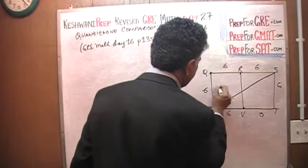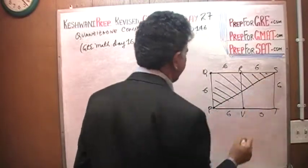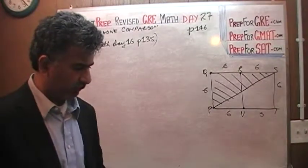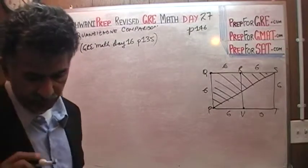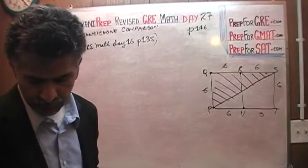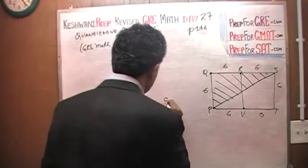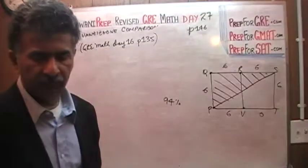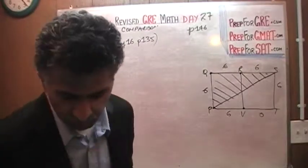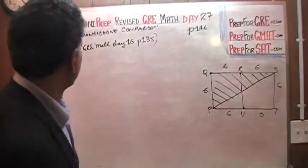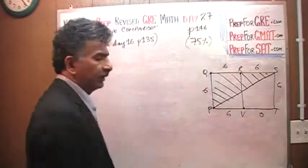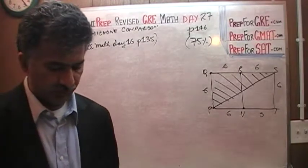There are two ways we can go about this. Incidentally, the previous problem on page 145 — 94% of people who took the exam had no problem with it. This one we are doing right now is also straightforward — 75% of people got it right. One quarter missed it, but the vast majority had no problem.